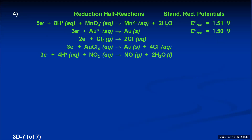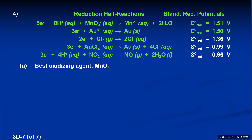Number four: find the missing reduction potentials to fill out this chart using handout six. The reduction potentials are: chlorine 1.36 volts, AuCl₄⁻ 0.99 volts, and NO₃⁻ 0.96 volts. Part A: what substance is the best oxidizing agent and what is the best reducing agent? Oxidizing agents are what get reduced, and the best oxidizing agent is the one most spontaneously reduced — whichever reaction has the highest positive reduction potential. That's the top reaction, whose reactant is permanganate, making permanganate the best oxidizing agent.